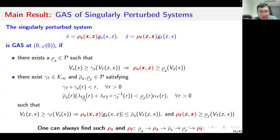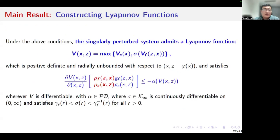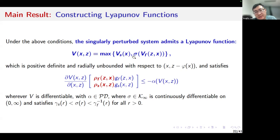I would also like to mention that we can always find such perturbation functions rhoS and rhoF. Since the stability properties of the subsystems are characterized by Lyapunov functions, it is natural to ask whether we can construct a Lyapunov function for the singularly perturbed system. This is the max-type Lyapunov function constructed based on the Lyapunov functions of the subsystems. Vs is the Lyapunov function of the reduced order subsystem, and Vf is the Lyapunov function for the unscaled boundary layer subsystem.